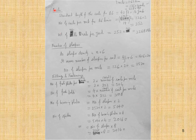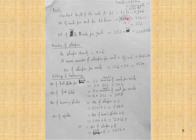Now considering an example in British units: the standard length of rails for broad gauge is 42 feet or 14 yards. Note that one mile equals 1.61 km, 1760 yards, or 5280 feet. The number of rails per mile for broad gauge is 1760 ÷ 14 × 2 = 126 × 2 = 252.